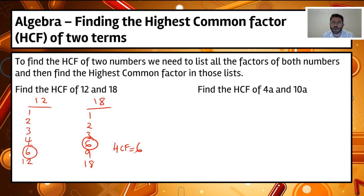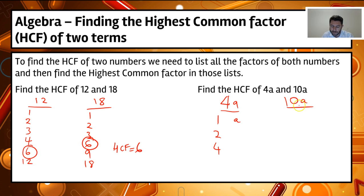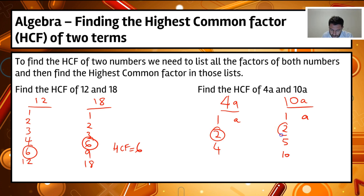Next, what's the highest common factor of 4a and 10a? For 4a, the number factors are 1, 2, and 4, and the pronumeral factor is a. For 10a, the number factors are 1, 2, 5, and 10, and the pronumeral factor is also a. The highest numerical common factor is 2, and a is also a common factor. So the highest common factor equals 2a.